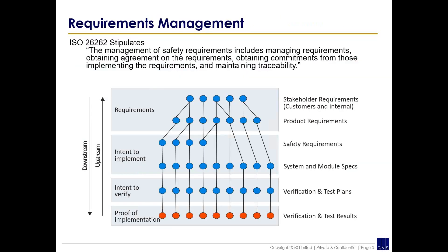First of all, requirements management. ISO 26262, which covers safety in automotive, is very clear. The management of safety requirements includes managing requirements, obtaining agreement on the requirements, obtaining commitments from those implementing the requirements, and maintaining traceability.